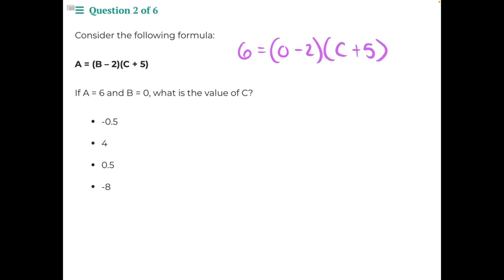Now we can start to simplify. We can start with this set of parentheses right here. 0 minus 2 would give us negative 2. We can't do anything with these parentheses because C is an unknown variable, so we would leave those exactly as they are and bring down our equal sign and our 6.